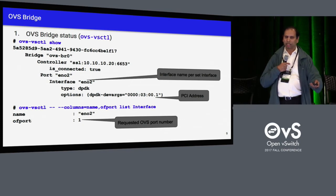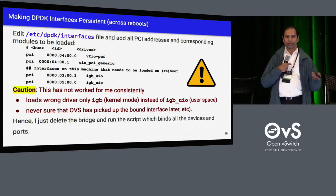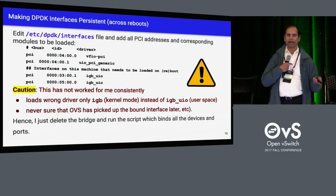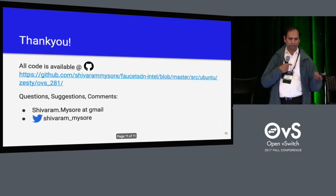This is how it's going to look when you run ovs-vsctl show. One of the challenges is making this configuration persistent: when you reboot, it will only load the kernel module and not the user-space module, so you have to rebuild the entire bridge setup. The way I handle it is to delete the bridge and then rebuild it using that same Step 2 script. All the instructions are available online.